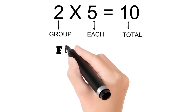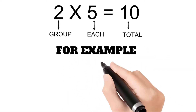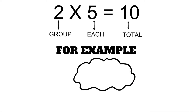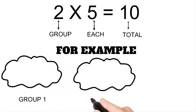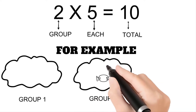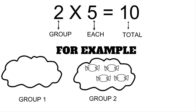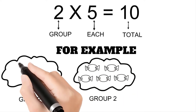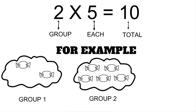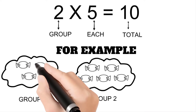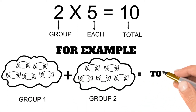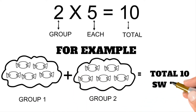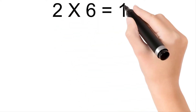For example, we have two groups — group one and group two. Group one has five sweets and group two also has five sweets. When we add these two groups together, we will get a total of ten sweets.